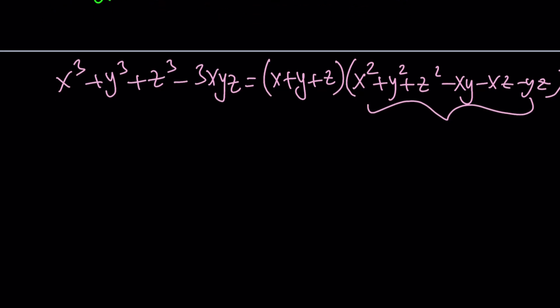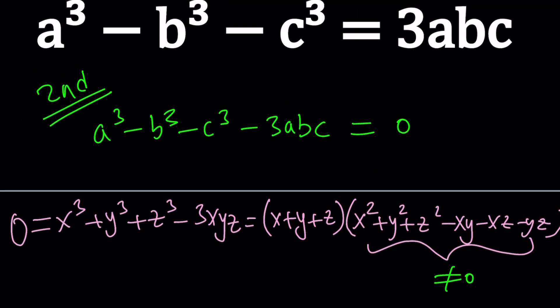So having said that, we can now set expression equal to zero. And from here, we get the following. Since the second expression cannot be zero, you already talked about it, right? So the first one needs to be zero.